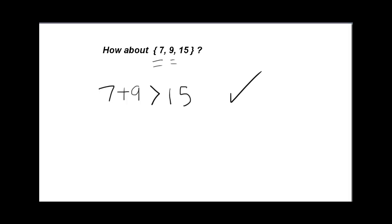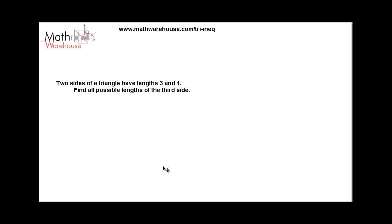Let's wrap up with the hardest type of problem that students generally have to answer. Two sides of a triangle have lengths 3 and 4 — find all possible lengths of the third side. Let's explore something before we figure out a general way of solving these kinds of problems. We have 3 and 4, and we want to know all the values of x we could have.